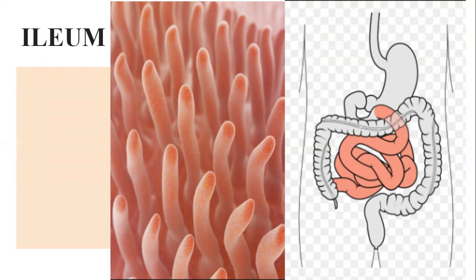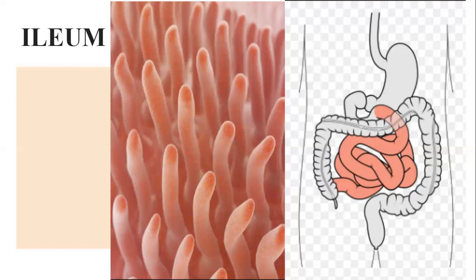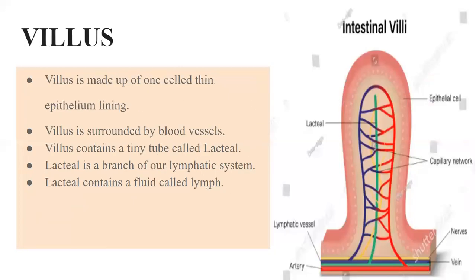Just as the furs on a towel increase its surface area for absorbing liquid, if you clean a wet surface with a plain cloth versus a towel, the towel dries it better because of its tiny furs increasing the surface area millions of times. The same is the case here — tiny villi increase the surface area millions of times. The singular of villi is villus, and each and every tiny villus is absorbing food molecules.